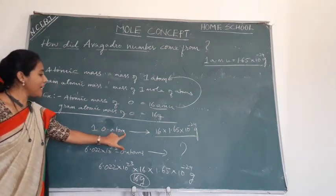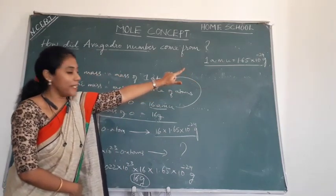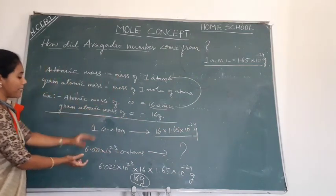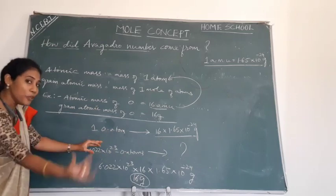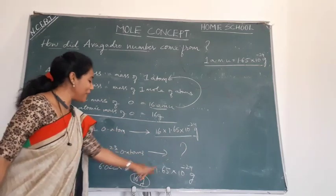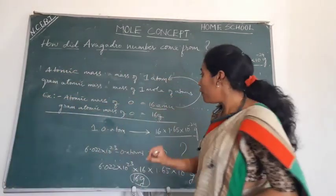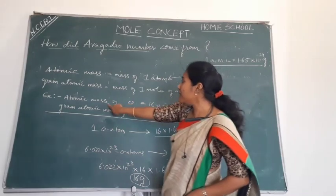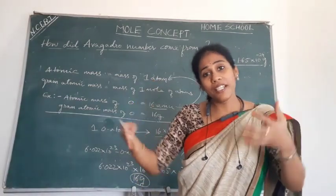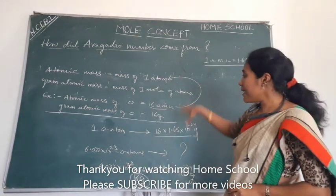Mass of one oxygen atom is 16 AMU, but when you convert AMU to grams using 1 AMU equals 1.65 into 10 to the power of minus 24, and calculate the gram atomic mass — mass of one mole of oxygen atoms — interestingly you get 16 grams. This is how you have the same digit for both atomic mass and gram atomic mass of any element or molecule, but with different units. Thank you.